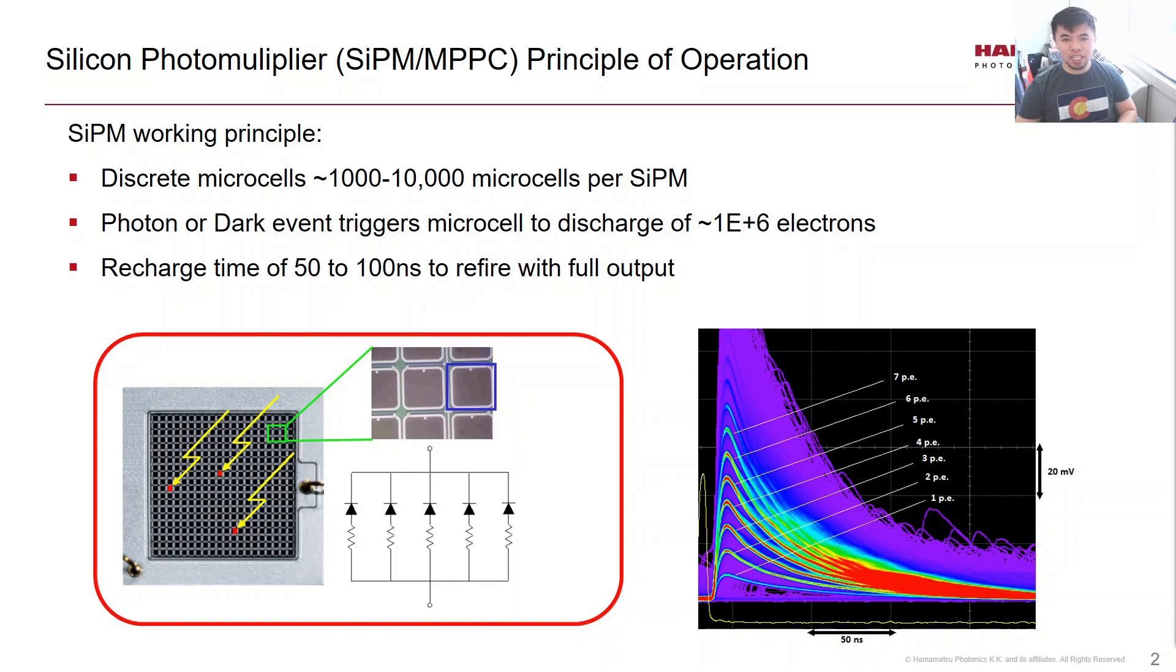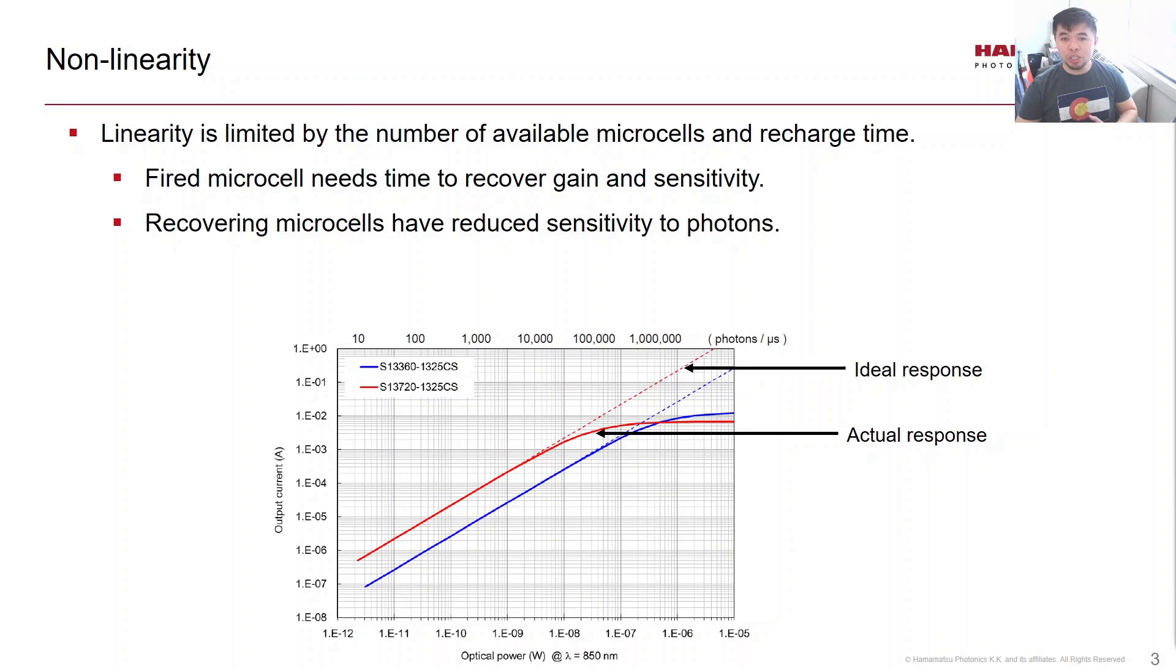Nonlinearity refers to the deviation of the output signal from what you would expect as you increase the light levels. This is caused by the finite number of microcells and the recovery time that each microcell needs to recharge its gain and sensitivity after it's been fired.